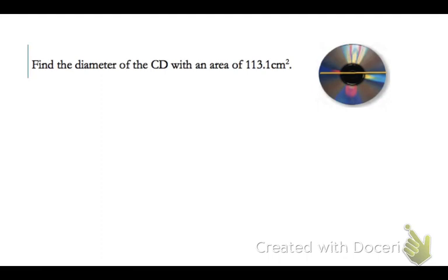Find the diameter of the CD with an area of 113.1 centimeters squared. Now, notice in this one, they have given us the area, and they want us to find the diameter. I can still use the area formula to do this. I'm going to use the area formula, solve for radius, and then multiply by 2.